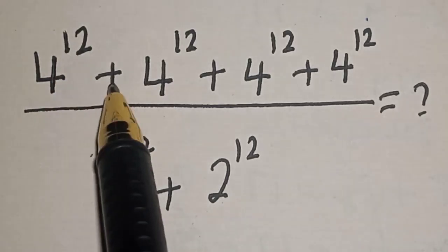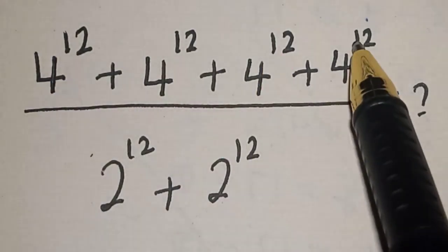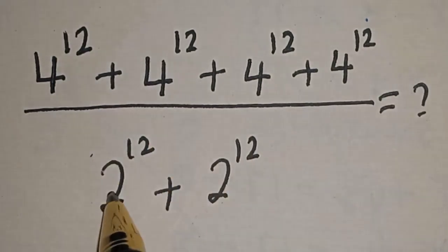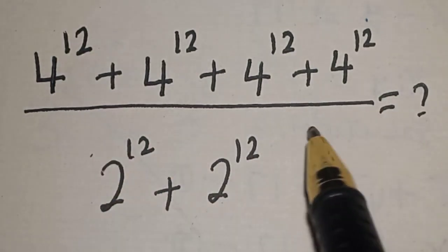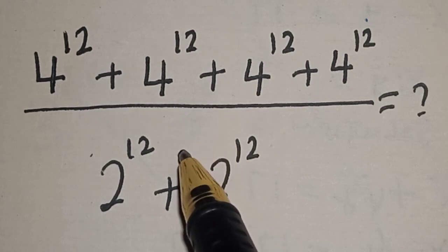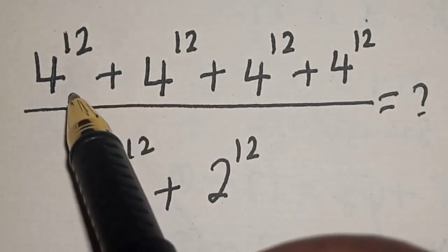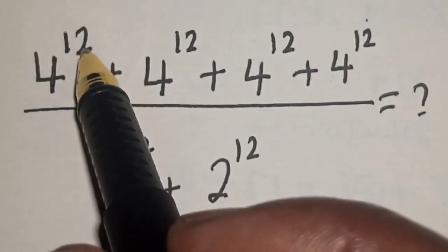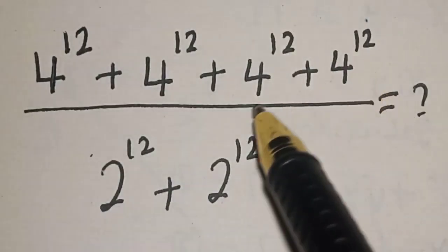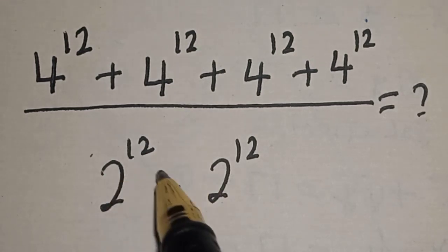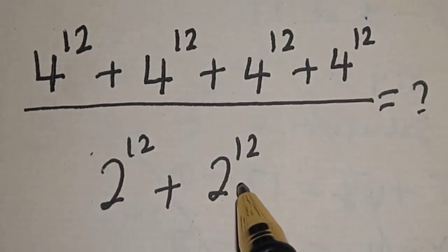Hi everyone, welcome to my class. In this class we quickly want to simplify this math problem: 4 raised to power 12 plus 4 raised to power 12 plus 4 raised to power 12 plus 4 raised to power 12, divided by 2 raised to power 12 plus 2 raised to power 12.